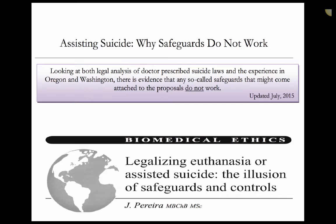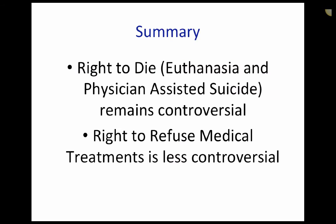One document maintained that there is an illusion of safeguards and controls with euthanasia or assisted suicide. This document states that in 30 years, the Netherlands has moved from euthanasia of people who are terminally ill to euthanasia of those who are chronically ill, from euthanasia for physical illness to euthanasia for mental illnesses, from euthanasia for mental illnesses to euthanasia for psychological distress or mental suffering, and now euthanasia simply if a person is over the age of 70 and is tired of living. In summary, a right to die involving euthanasia and physician-assisted suicide remains controversial. However, a right to refuse medical treatments is less controversial. Thank you very much.